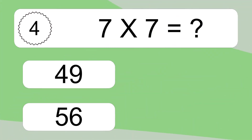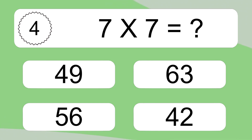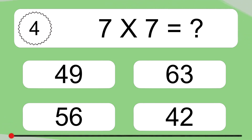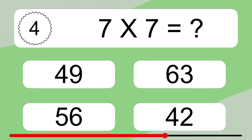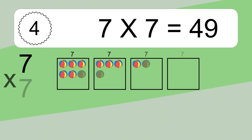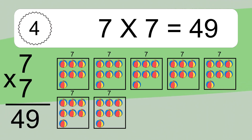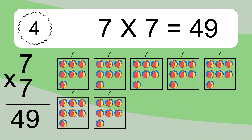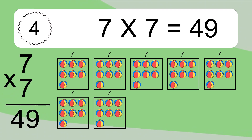Seven times seven equals what? Seven times seven equals forty-nine. We have seven boxes, and each box has seven colorful balls inside. If you count all the balls in all the boxes together, you will have seven times seven balls. This equals forty-nine balls.